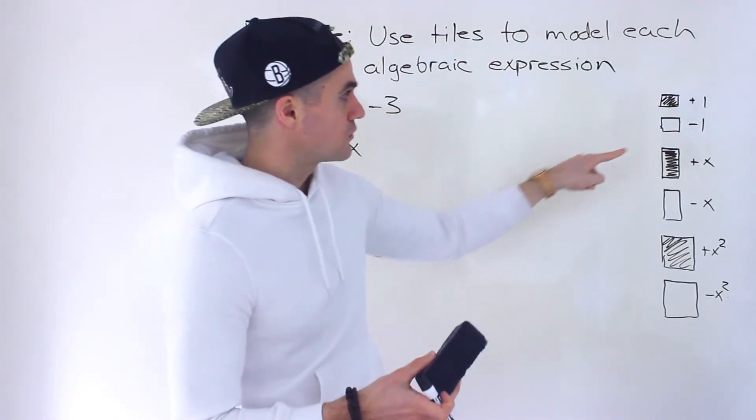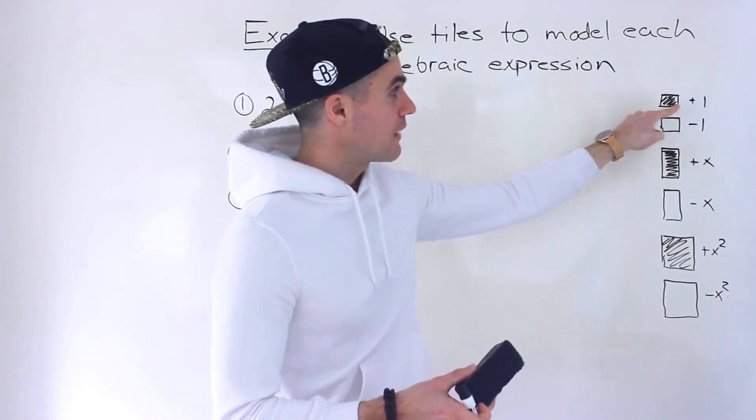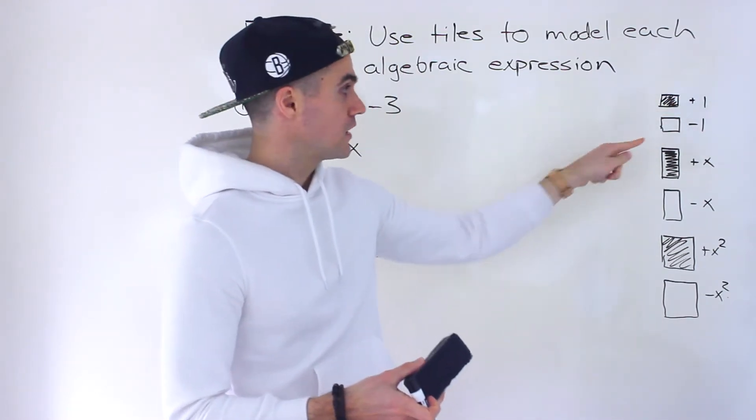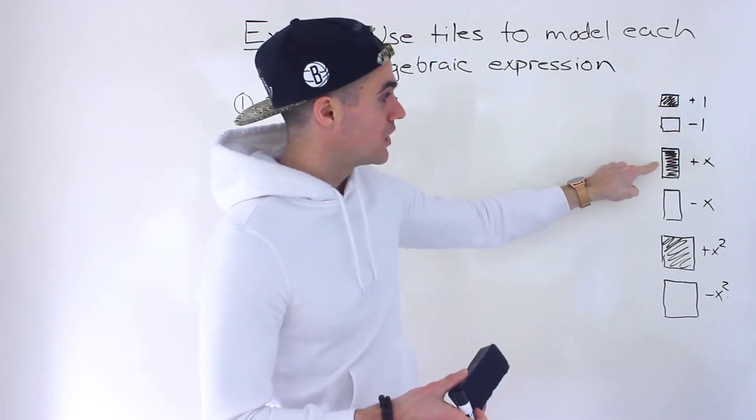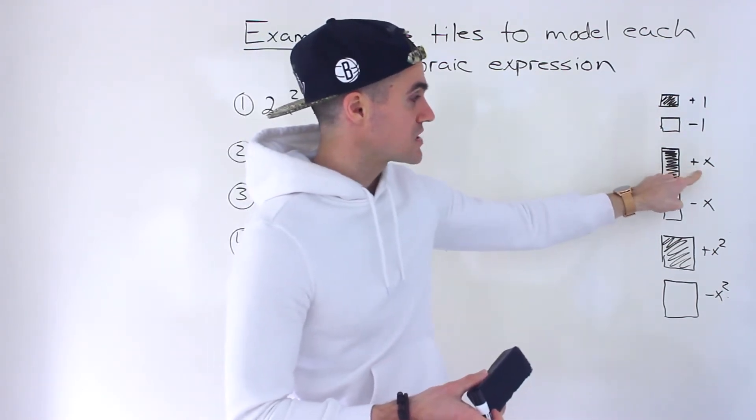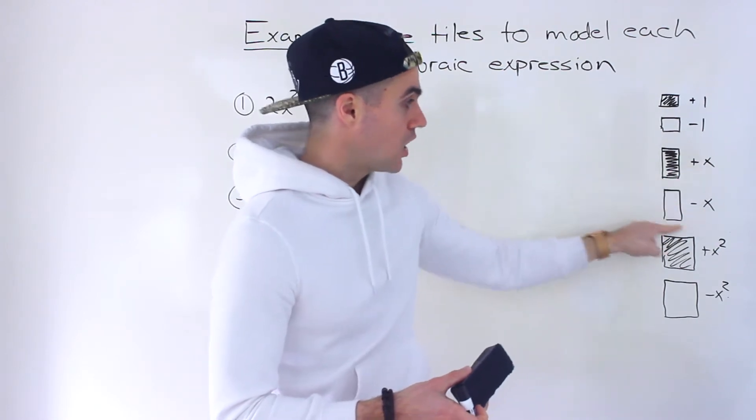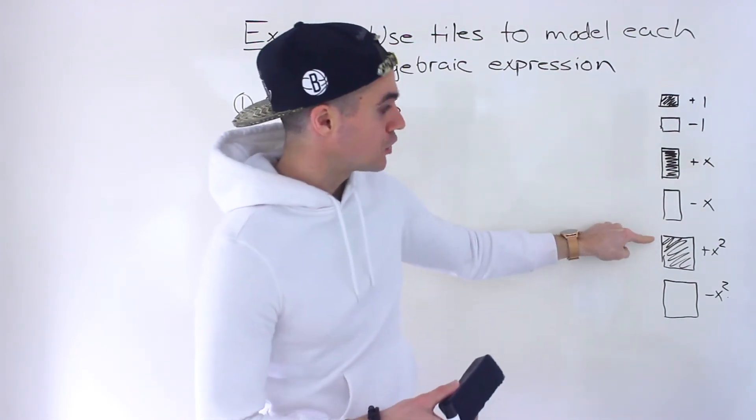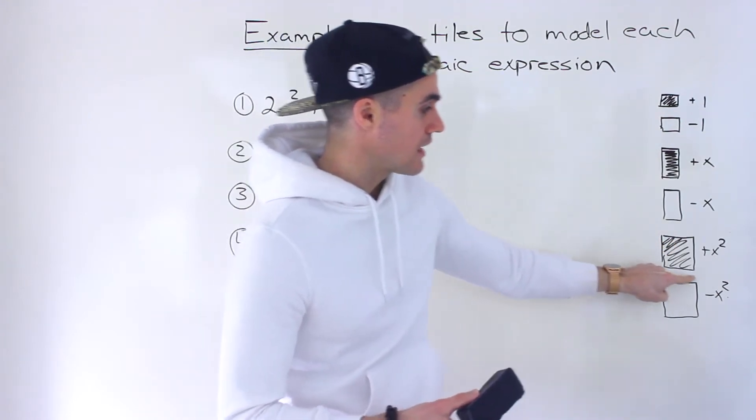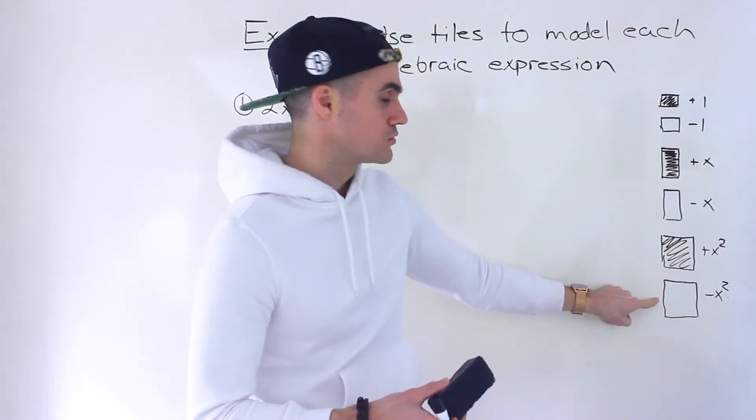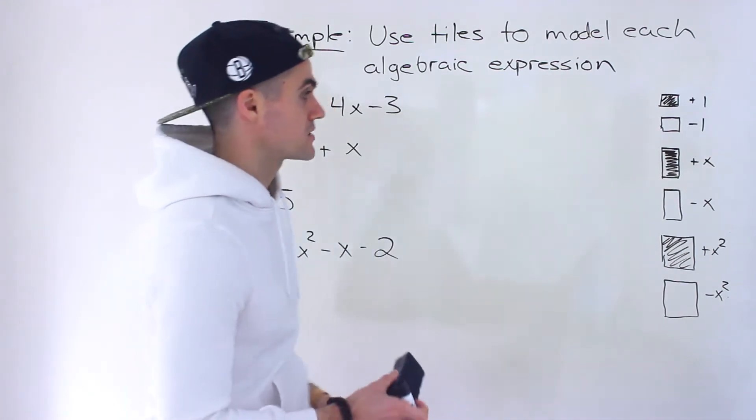So just as a quick review, if you have a small filled in square, that represents the number plus 1. If you have a small hollow square, it's minus 1. A rectangle that's filled in represents positive x. A hollow rectangle is minus x. And then a large filled in square is plus x squared, and a large hollow square is minus x squared.